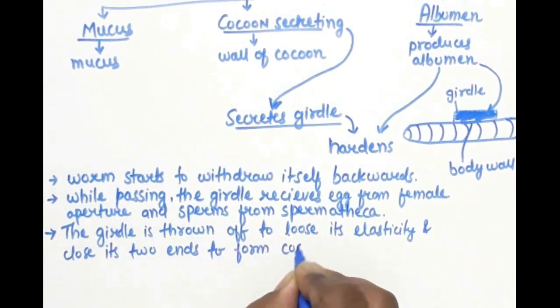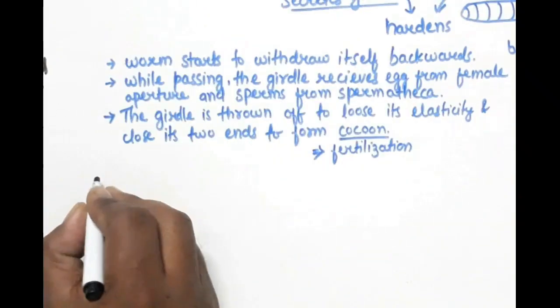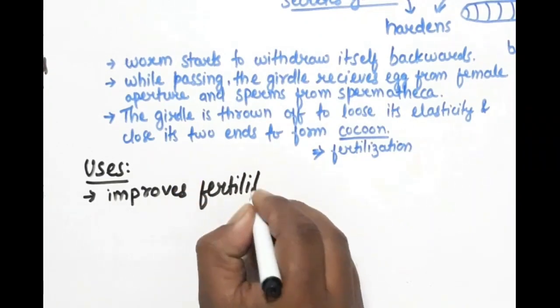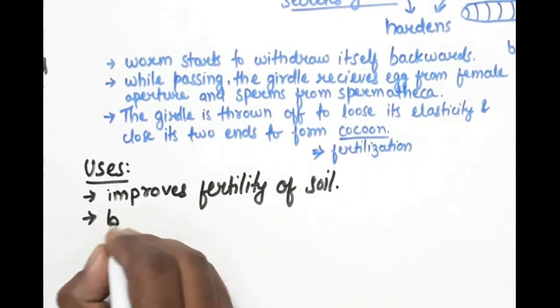The cocoon is formed and it seals the walls. Basically, the fertilization happens in the cocoon. And finally, when the cocoon develops, we will get two or three offspring. So this was the main fertilization process.